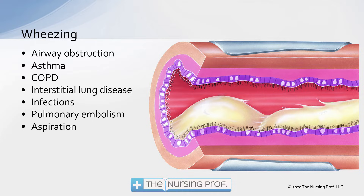Now let's go deeper into wheezing. The airway is constricted with some inflammation and secretions built up. This can happen with asthma and COPD. Inflammatory lung diseases cause the lung to produce sputum and mucus — the body's inflammatory response trying to wash away allergens, cigarette smoke, or other irritants — which results in this mucus formation.